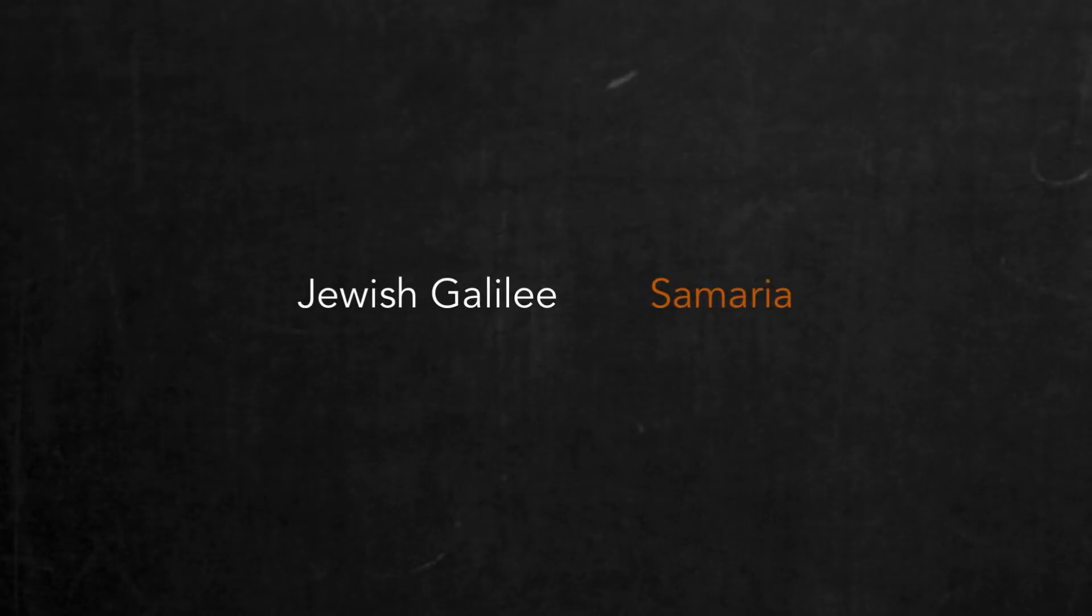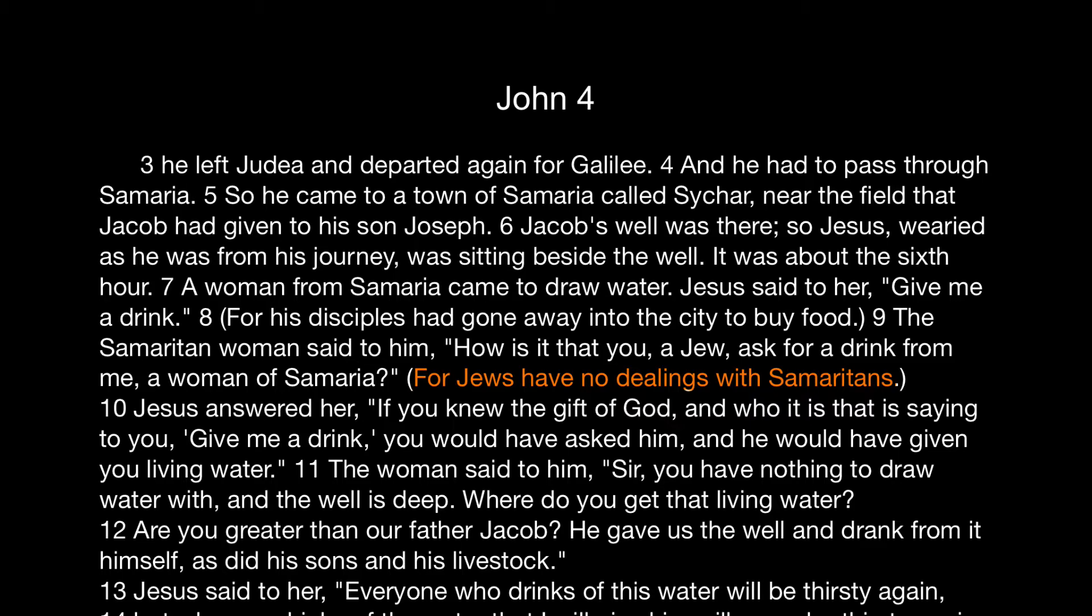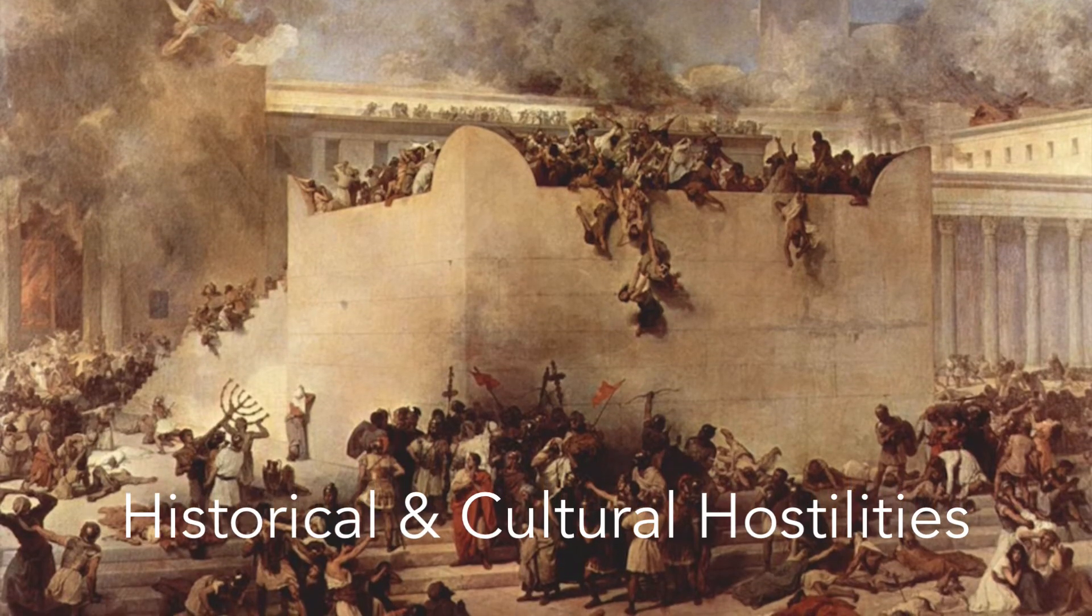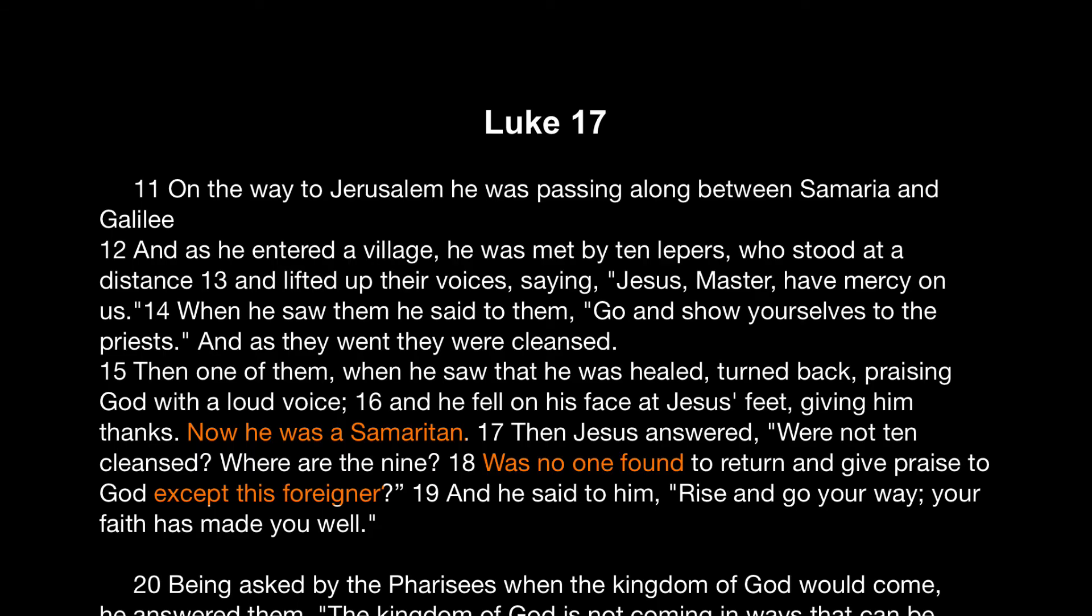Furthermore, the specific territories mentioned are Jewish Galilee and Samaria. There wouldn't normally be much association between the Jews of Galilee and the Samaritans because of historical and cultural hostilities. Yet their unfortunate bout with leprosy has brought these ten Jewish and Samaritan lepers together into a rare close association, which proves to be crucial as the story unfolds.